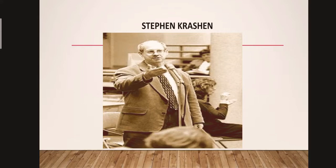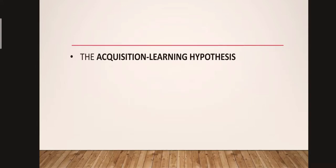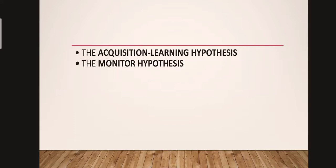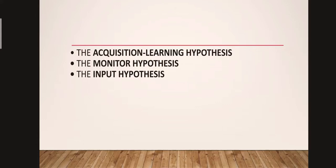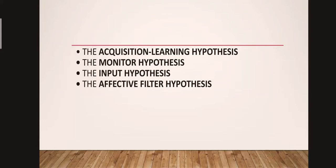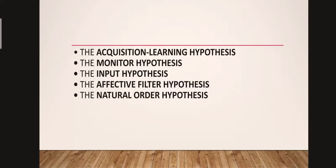Krashen's theory of second language acquisition consists of five main hypotheses: the acquisition-learning hypothesis, the monitor hypothesis, the input hypothesis, the affective filter hypothesis, and the natural order hypothesis.